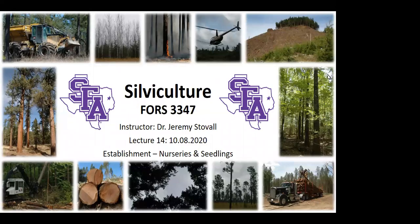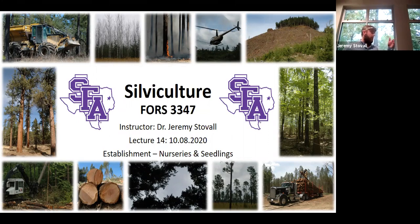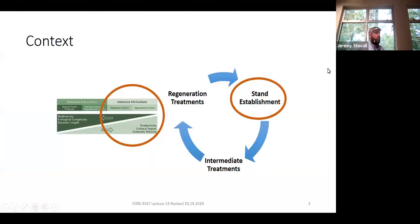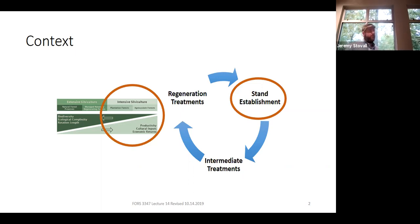Today we'll be going over nurseries and seedlings. This will build on what we did in tree improvement and lead into tree planting next class. When you're talking about having a nursery infrastructure and a tree improvement infrastructure, you're probably talking about intensive silviculture, because that's very expensive. To make that expense make sense, you're not doing natural regeneration — you're focused on using the trees you plant to gain economic return and make all that infrastructure pay for itself.